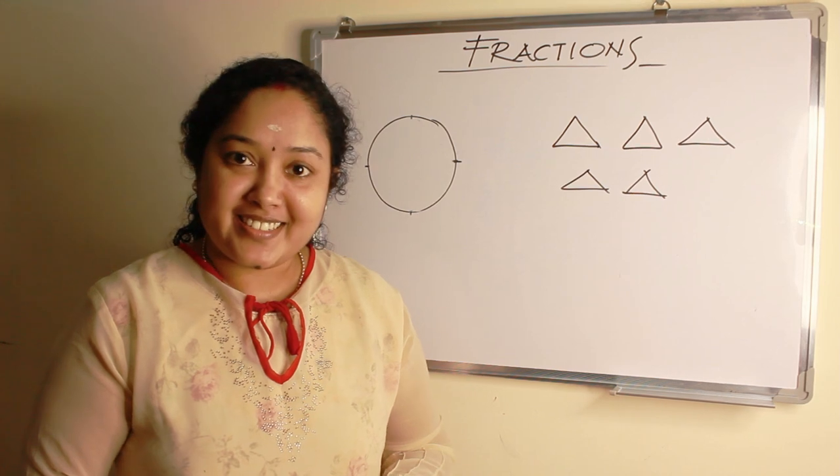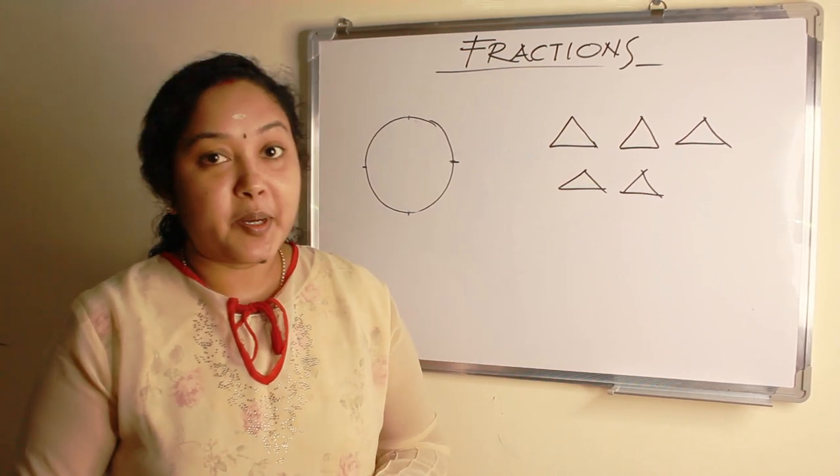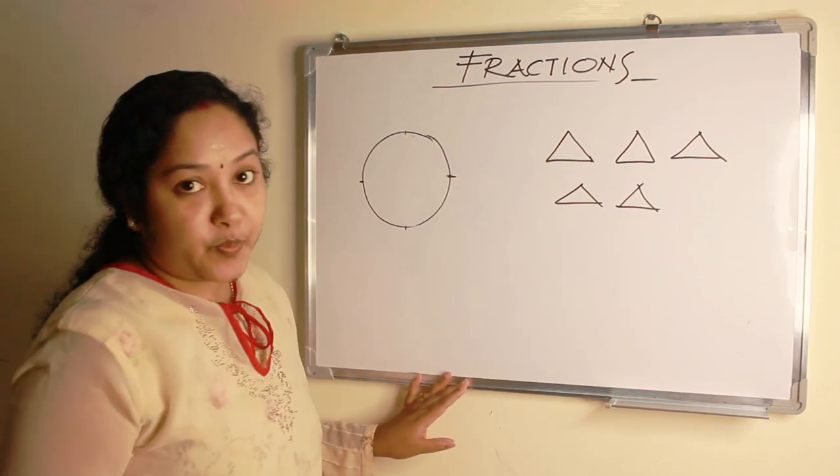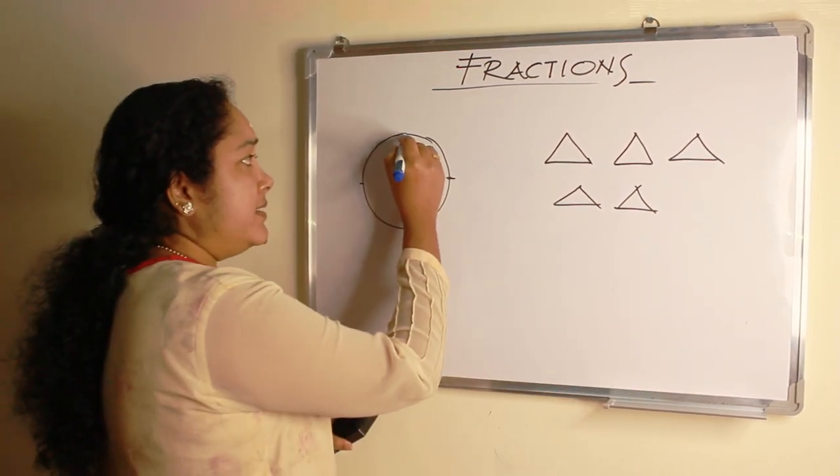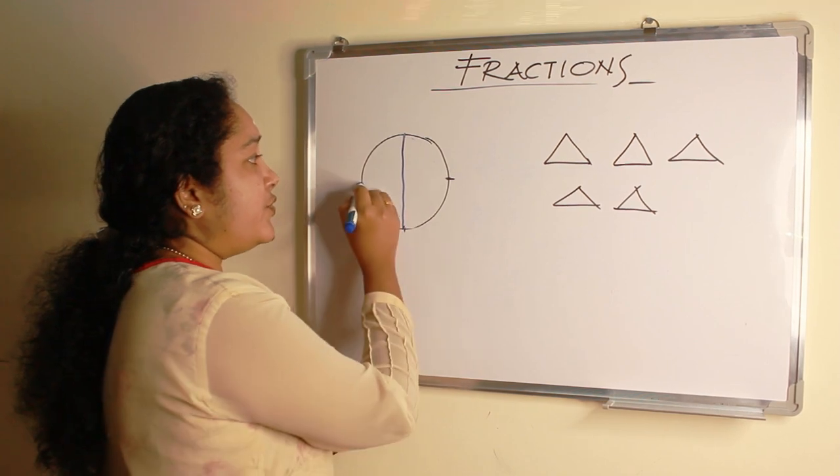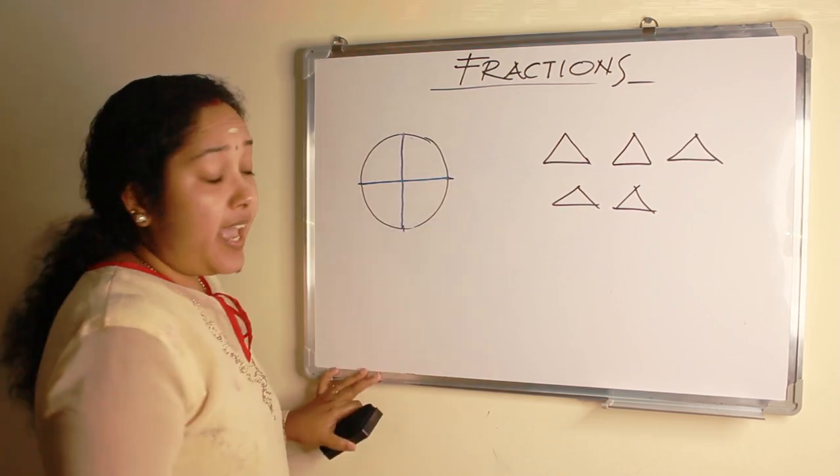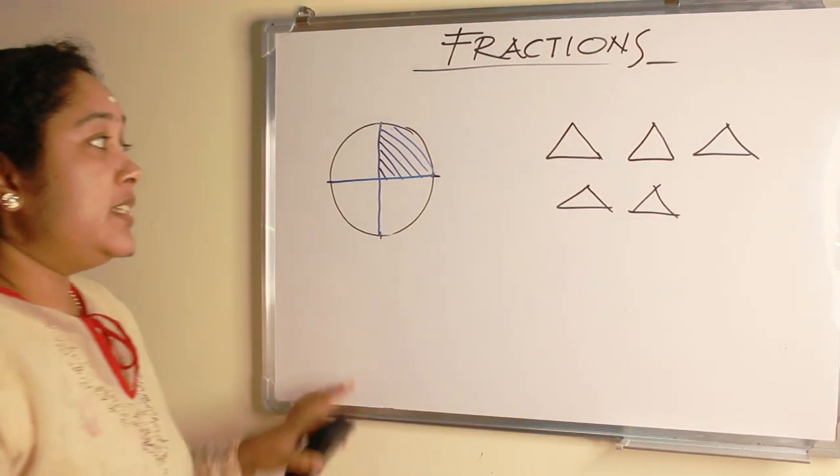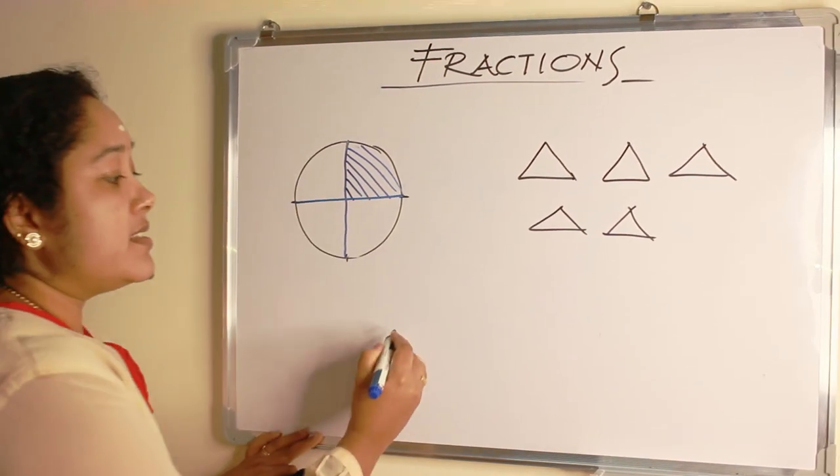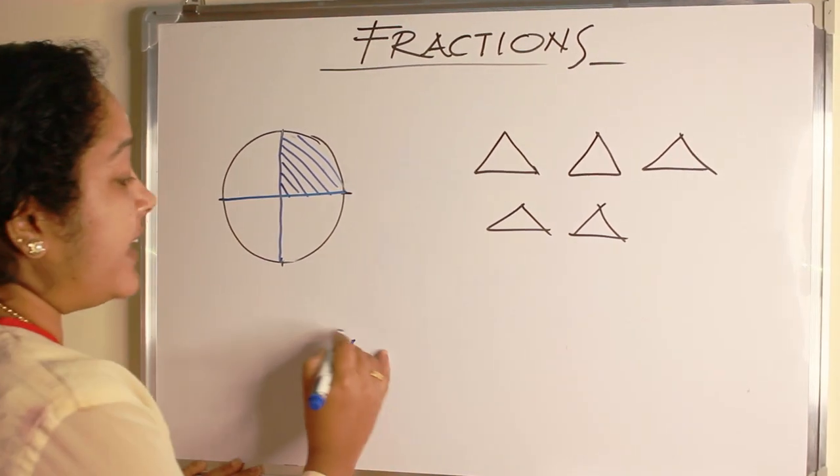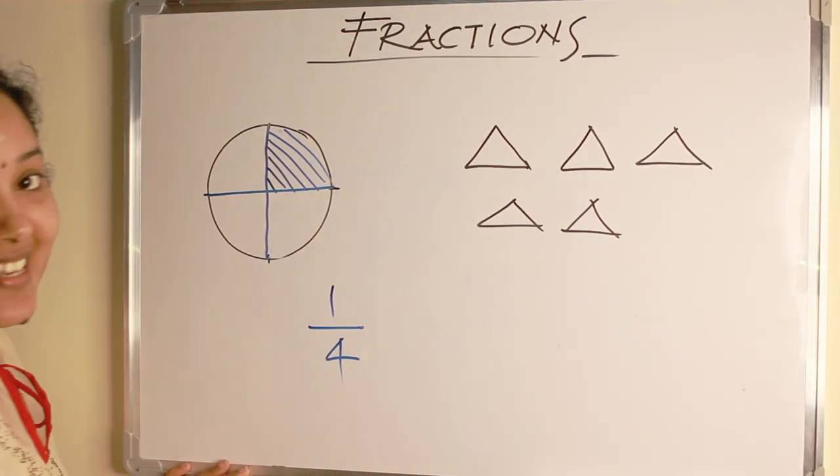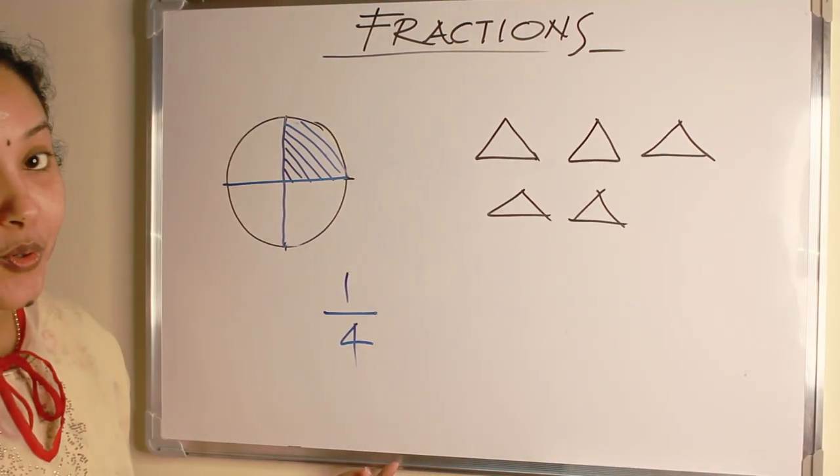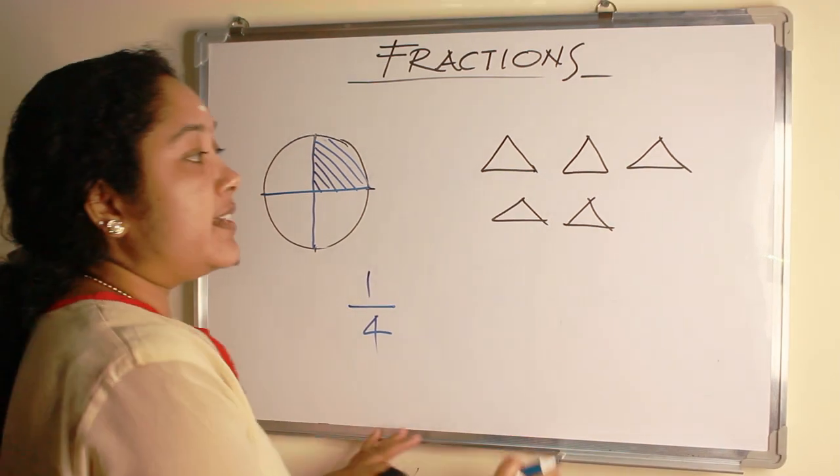What is Fraction? A fraction represents a part of whole or a part of group. Here is a circle divided into 4 equal parts and we shade 1 of the part. The total number of parts is 4 as denominator and shaded part 1 as numerator. So the fraction of the circle is 1 by 4. Let us move to another example.